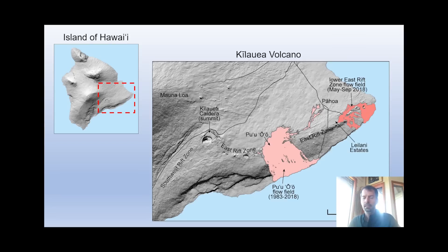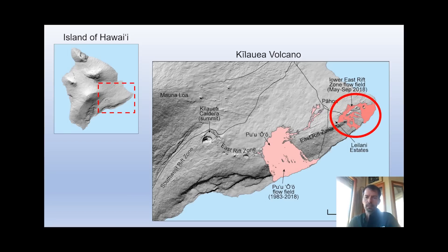Next let's talk about the Lower East Rift Zone. This is one of the most significant eruptions on Kilauea in the past 200 years and by far the most destructive. It occurred low on the volcano's flanks, covered a lot of residential areas, and caused a lot of destruction.